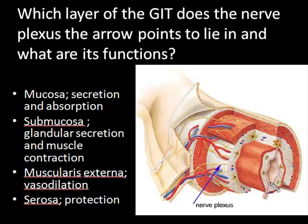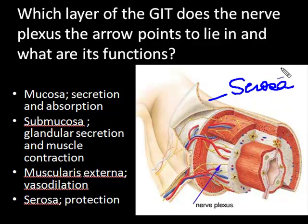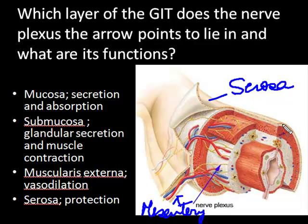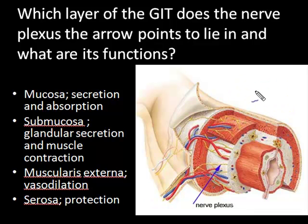Let's first identify the layers of the GI tract, going from outside in. The most superficial layer is the serosa, and you can see the mesentery with nerves and blood vessels passing through it. The second layer is the muscularis externa, which consists of an outer longitudinal and an inner circular layer. In between these two layers is a nerve plexus that you can see.